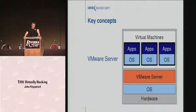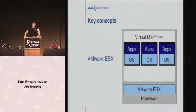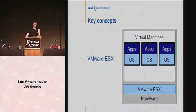VMware Server looks something like this. You've got your hardware, on top of that you install your operating system — whether Windows, Linux, whatever. On top of that you install VMware Server, and then on top of that you can create your virtual machines, which all have their own operating system and applications. ESX is slightly different — ESX essentially is the operating system. So by running ESX, you strip out one layer of complexity. Your virtual machines can talk to ESX, which talks directly to the hardware. So if you want to give 2GB of RAM to a virtual machine, it has no operating system to contend with for that RAM — it talks directly to ESX.